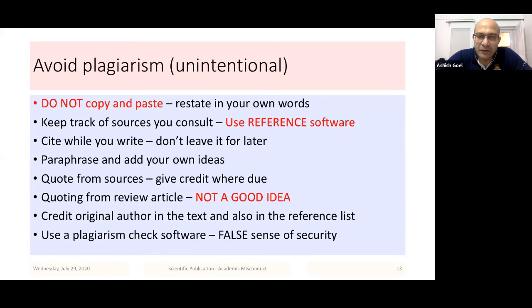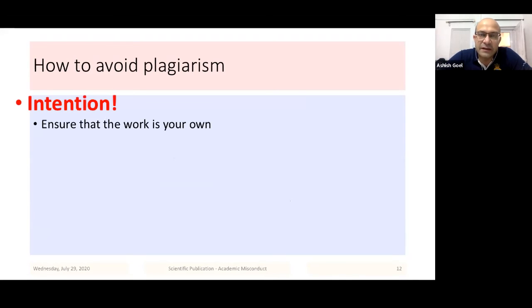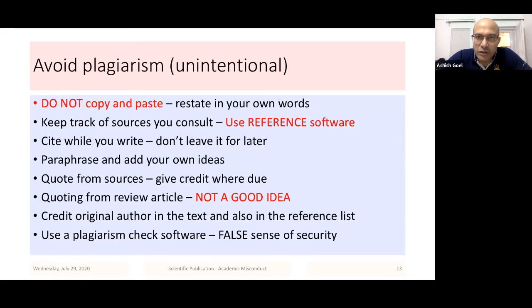And finally, you should always use a plagiarism check software. But please remember that once you use a plagiarism checking software, you get a false sense of security which is not required. The most important thing is that your intention needs to be correct. If your intention is correct, do not copy and paste, use a reference manager software and cite as you write, and do not quote from a review article. Go back to the original study and quote from there and finally use a plagiarism check software. This is the most important slide in my presentation today and I have spent the most amount of time on this particular slide because I realized that a lot of young authors fall into this trap and find it easy to get into this trap, and it's always so difficult to get out once you've fallen into it.